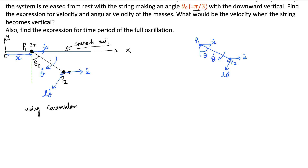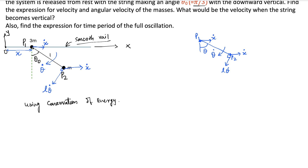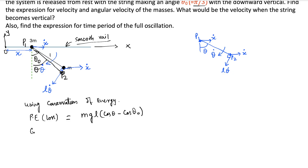Using conservation of energy: at any given point in time when the string makes angle theta, the total loss in potential energy is mgl(cos theta minus cos theta zero). The gain in kinetic energy is one half times 3m times x dot squared plus one half times m times v squared, where v is the speed of mass m.